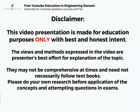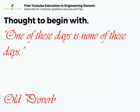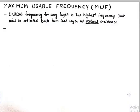Hello friends, welcome to another tutorial in wave propagation. We're discussing ionospheric propagation and today we'll talk about maximum usable frequency. We've already talked about critical frequency which is fixed for a layer and it is the highest frequency that can be reflected back from that layer at a vertical incidence.